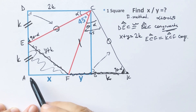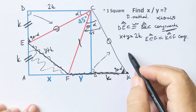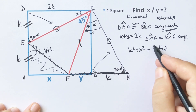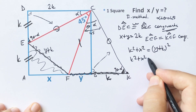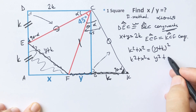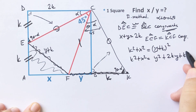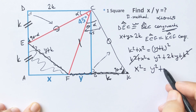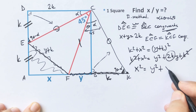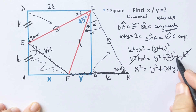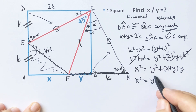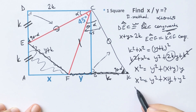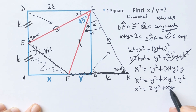For this triangle, if we apply the Pythagorean theorem: k squared plus x squared equals (y + k) squared, which expands to y squared plus 2yk plus k squared. The k squared terms cancel, so x squared equals y squared plus 2yk. Since 2k equals x + y, we get x squared equals y squared plus (x + y)y, which gives x squared equals x squared... so x squared equals 2y squared plus xy.